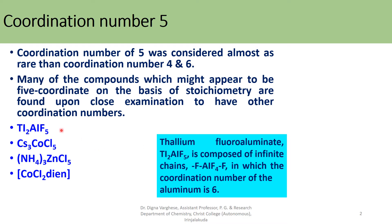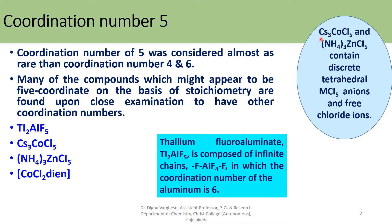Thallium fluoroaluminate is composed of infinite chains of fluorine, AlF4, fluorine, in which the coordination number of the aluminium is found to be 6. The cesium chlorocobaltate complex Cs3CoCl5 contains discrete tetrahedral MCl4 anions and free chloride ions. So the titanium compound has coordination number 6 for aluminium, and in the cesium compound the cobalt is a four-coordinate tetrahedral complex.